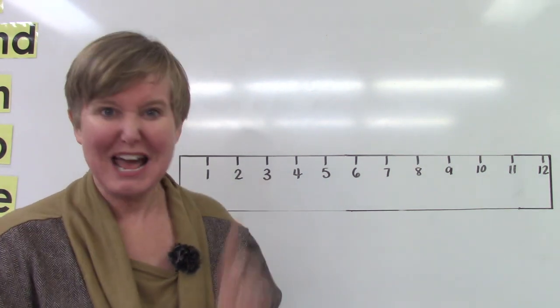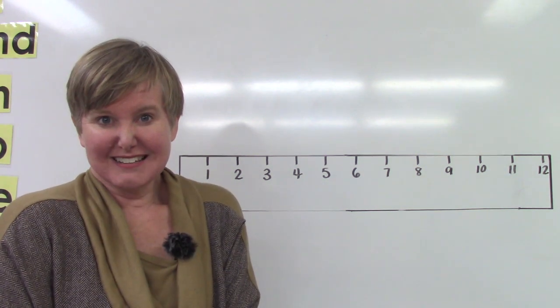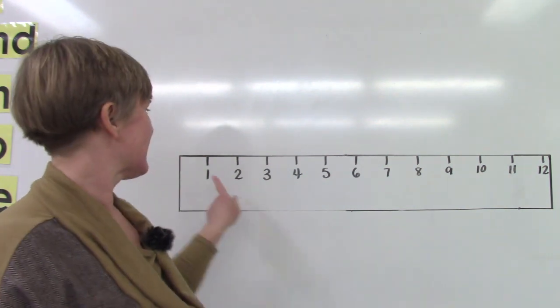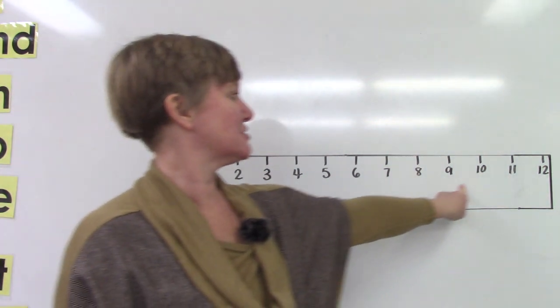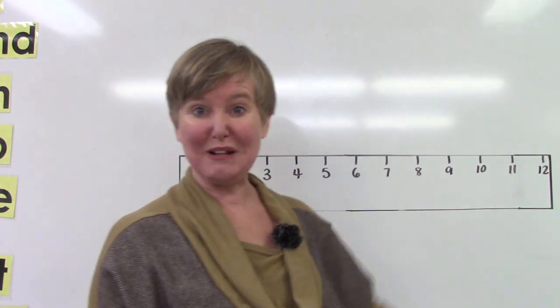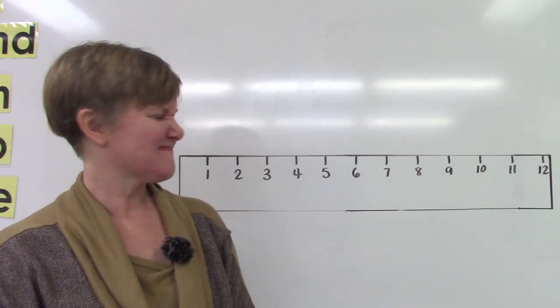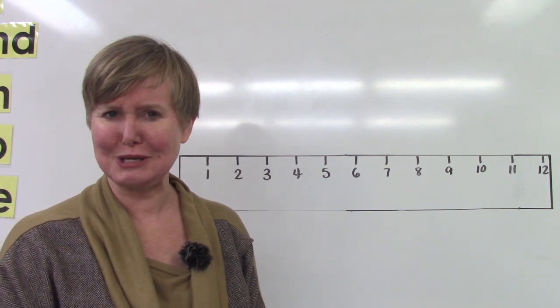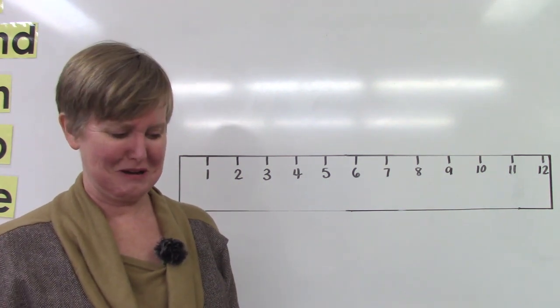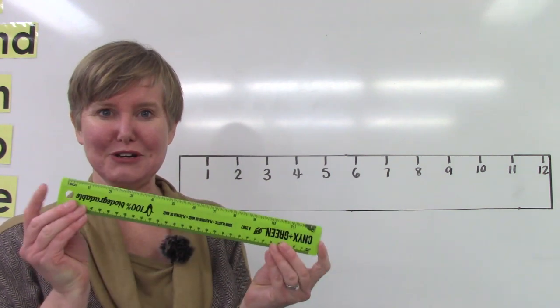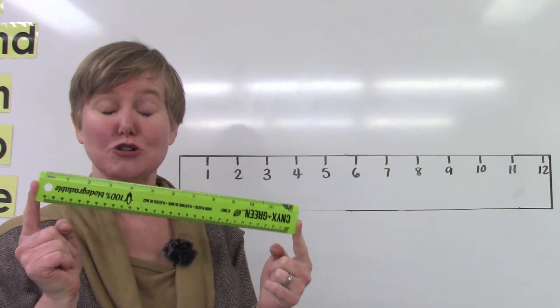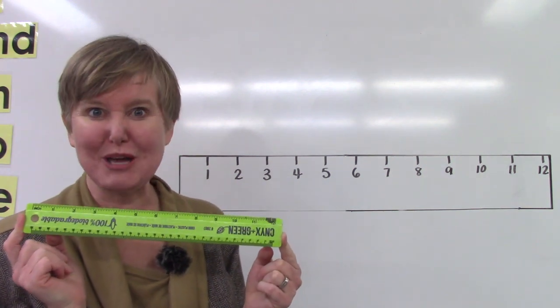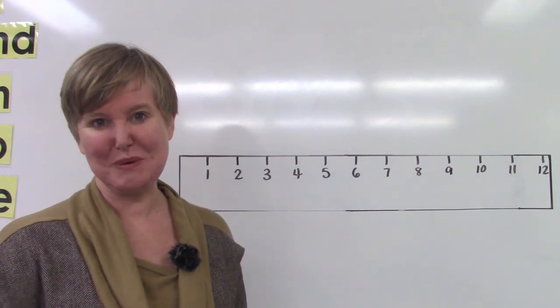Do you see what I have behind me? What is it? It's a ruler. Do you notice that it goes all the way to the number 12? Is it the same size as a ruler that you would usually use? Oh dear no! Usually rulers are this big. They are 12 inches exactly. I made mine a lot bigger so that we can see it a little bit better on the board.